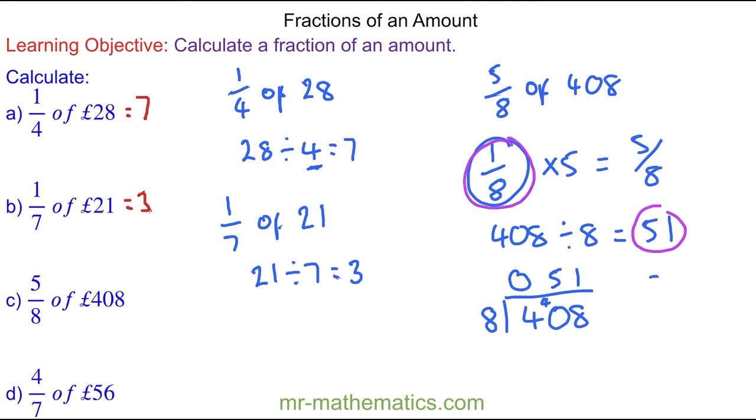So now we're going to multiply 51 by five. One times five is five and five times five is 25. So this is five eighths of 408.